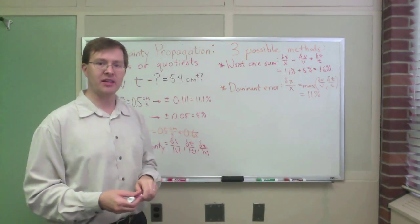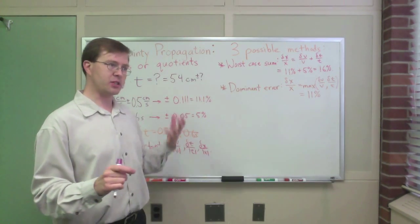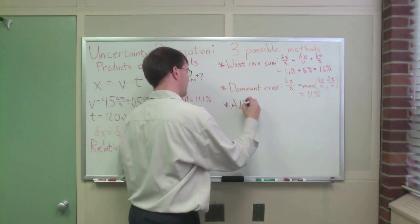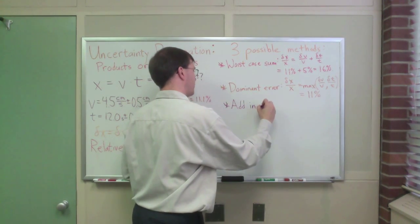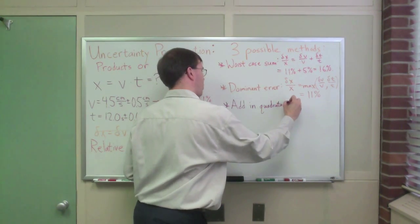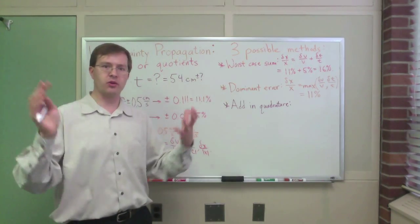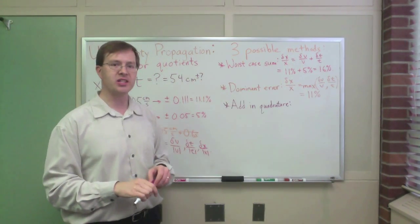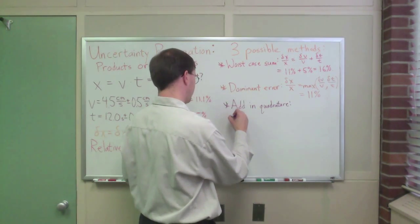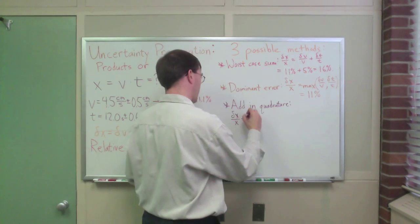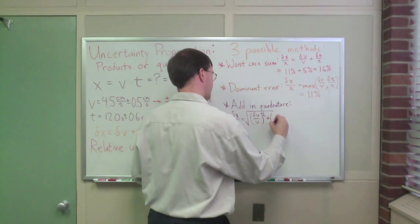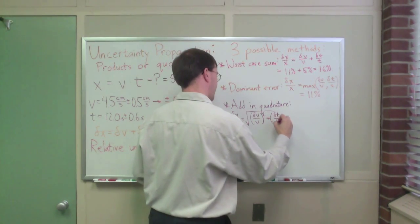Finally, the last method, the one that is the gold standard, as explained in the previous video, is adding in quadrature. Add errors, uncertainties, in quadrature. And again, quadrature refers to squares, and it's just adding the squares like the Pythagorean theorem. And this one, I'm going to go down a line, delta x over x equals the square root of delta v over v squared plus delta t over t squared.